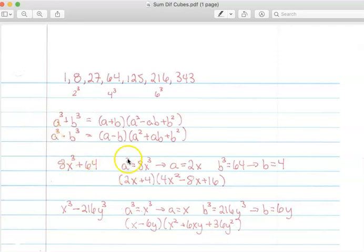So let me find my A and B. In this example, A cubed is equal to 8x cubed. So to get A, I need to take the cubed root of this. So the cubed root of 8 is 2, and the cubed root of x is x. So my A equals 2x.